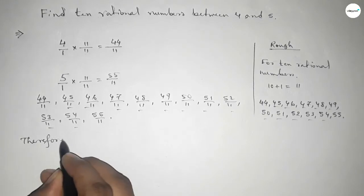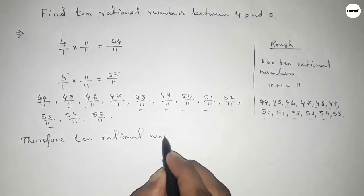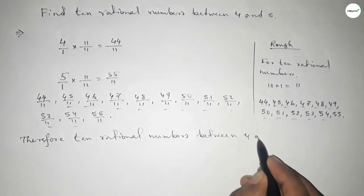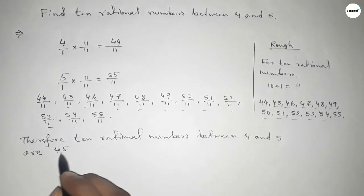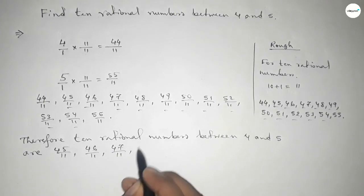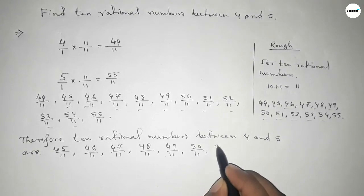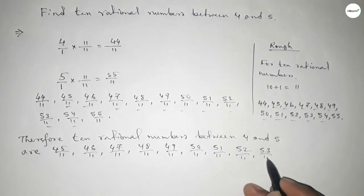Therefore, the 10 rational numbers between 4 and 5 are, first one is 45 over 11 to 54 over 11. So this is the process to find out 10 rational numbers between 4 and 5.